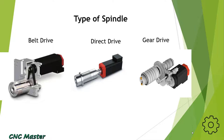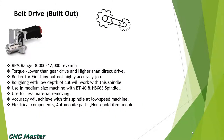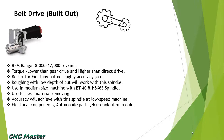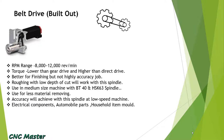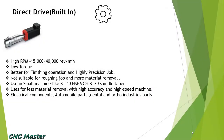Belt drive: the belt connects the spindle motor and spindle with the help of a belt, so it is called belt drive. In this, the RPM range is 8000 to 12000. Torque is lower than gear drive and higher than direct drive. Roughing is possible with low depth of cut. It is used in BT40 and HSK63 spindles. You can achieve better surface finish but not high accuracy.